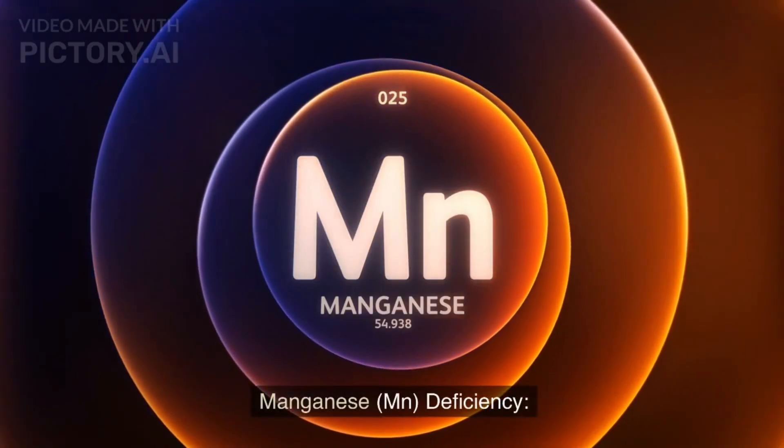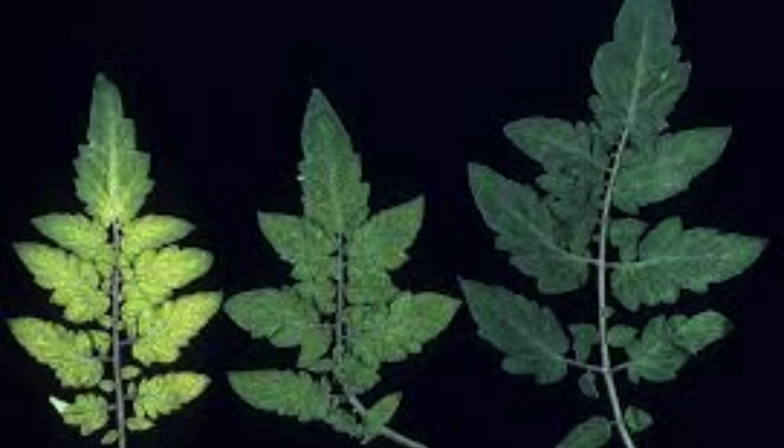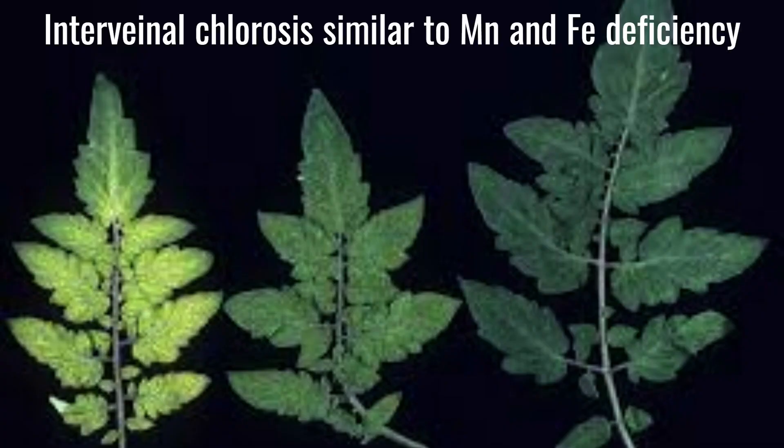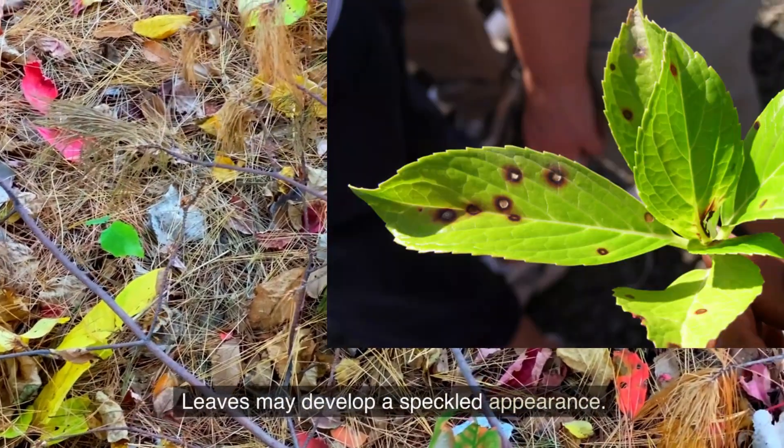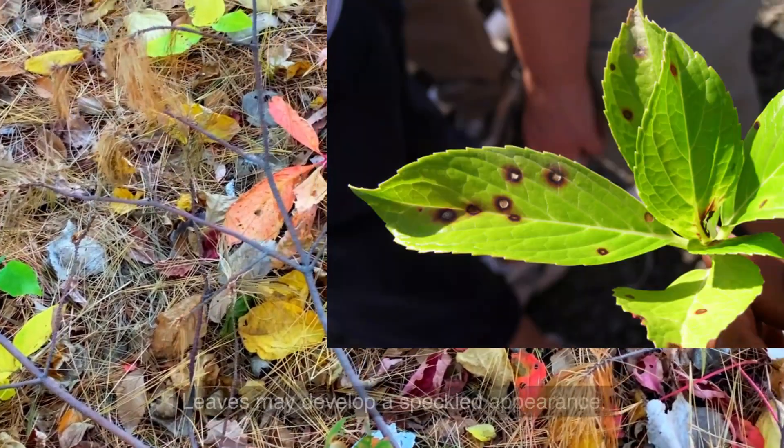Manganese (Mn) Deficiency. Interveinal chlorosis, similar to magnesium and iron deficiencies. Leaves may develop a speckled appearance.